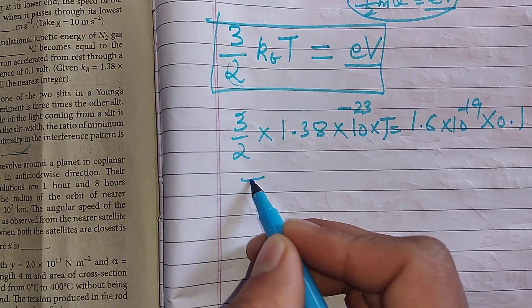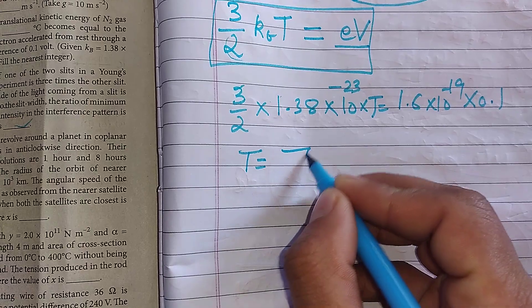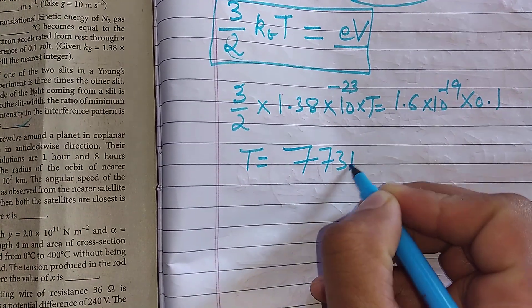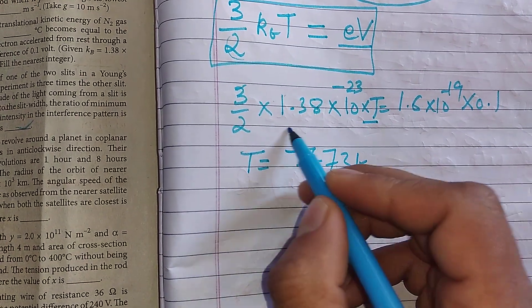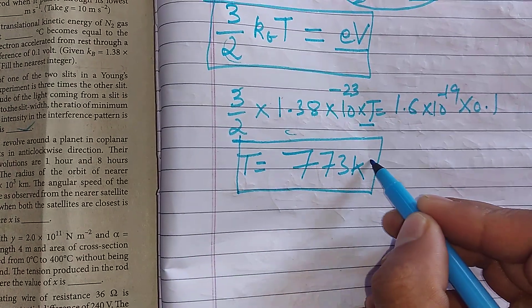So students, you will solve this. And after solving this, you will have T value. That is 773 Kelvin. You can solve this simply by cross multiply. But after solving that, you will have T value of 773 Kelvin because you have all the calculations in the SI system.